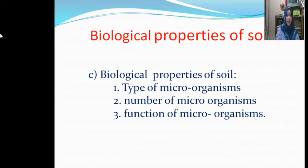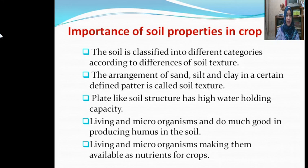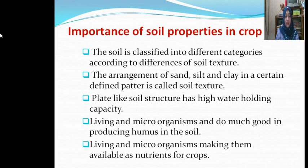Now I discuss with you the Importance of Soil Properties in crop production. The importance of soil properties is unlimited for crop production. Soil Texture, Soil Structure, Soil Density and other physical properties of soil influence growth and production. The soil is classified into different categories according to differences of soil texture. Most of the crops grow well in loamy soil.